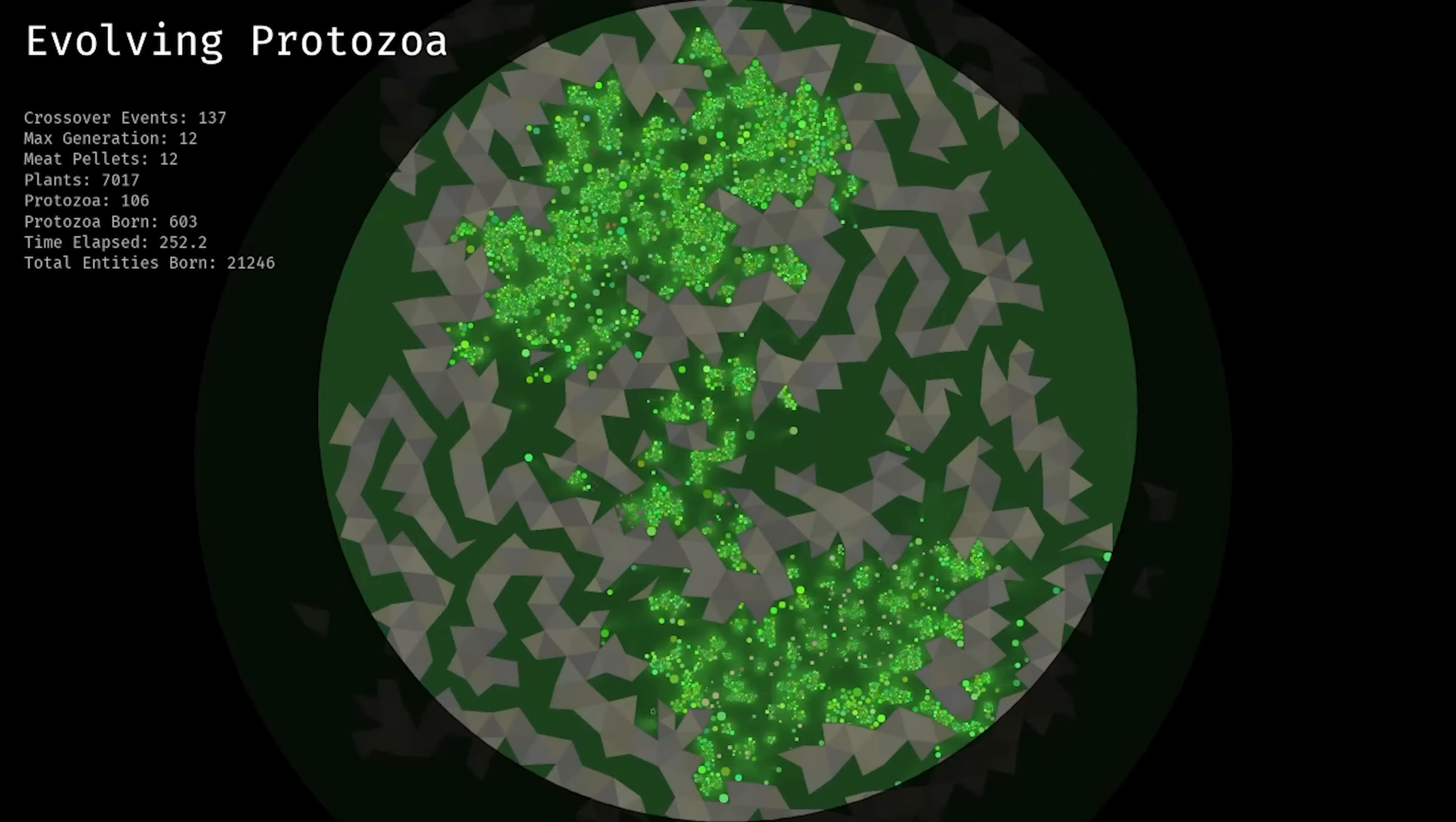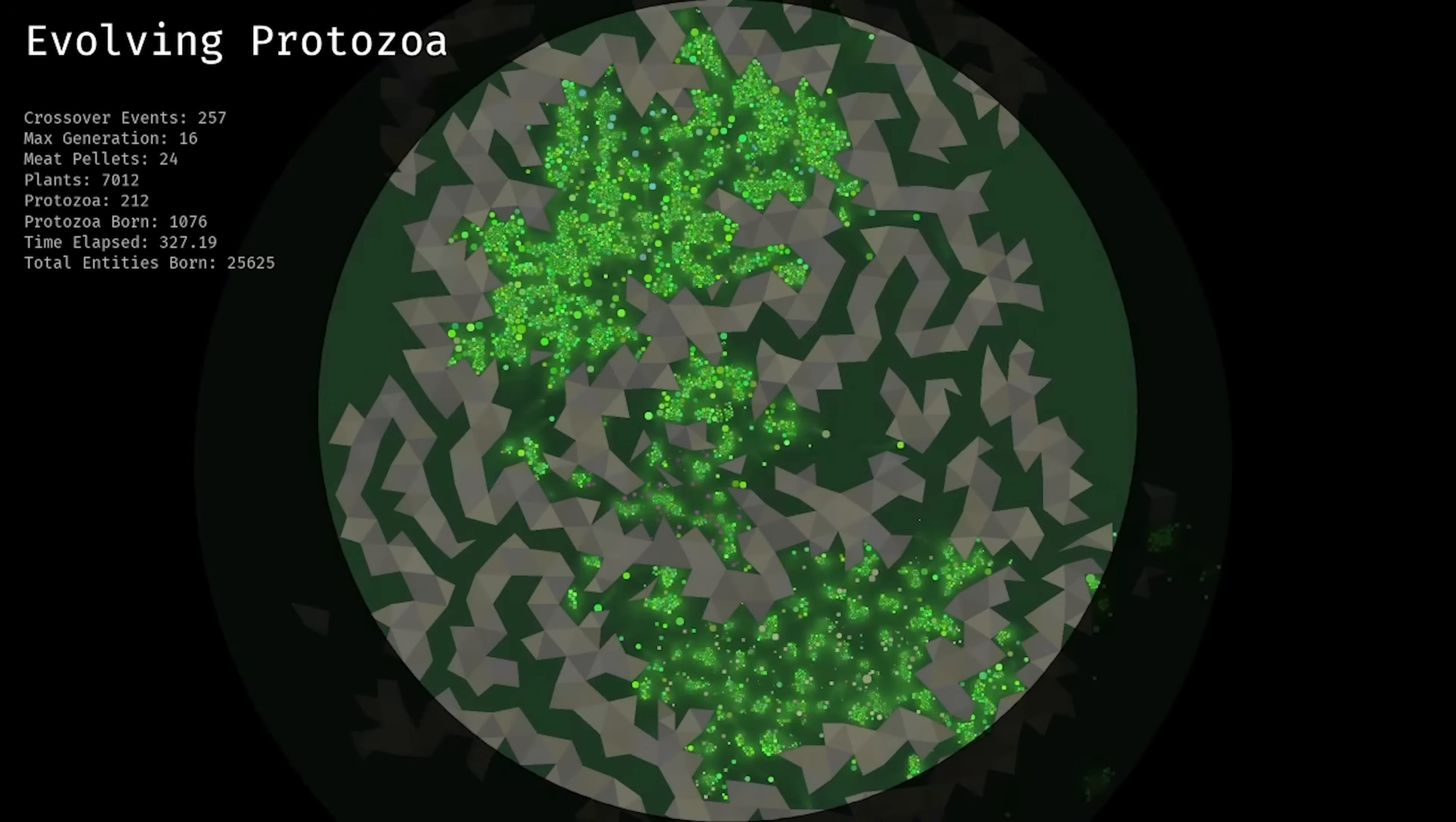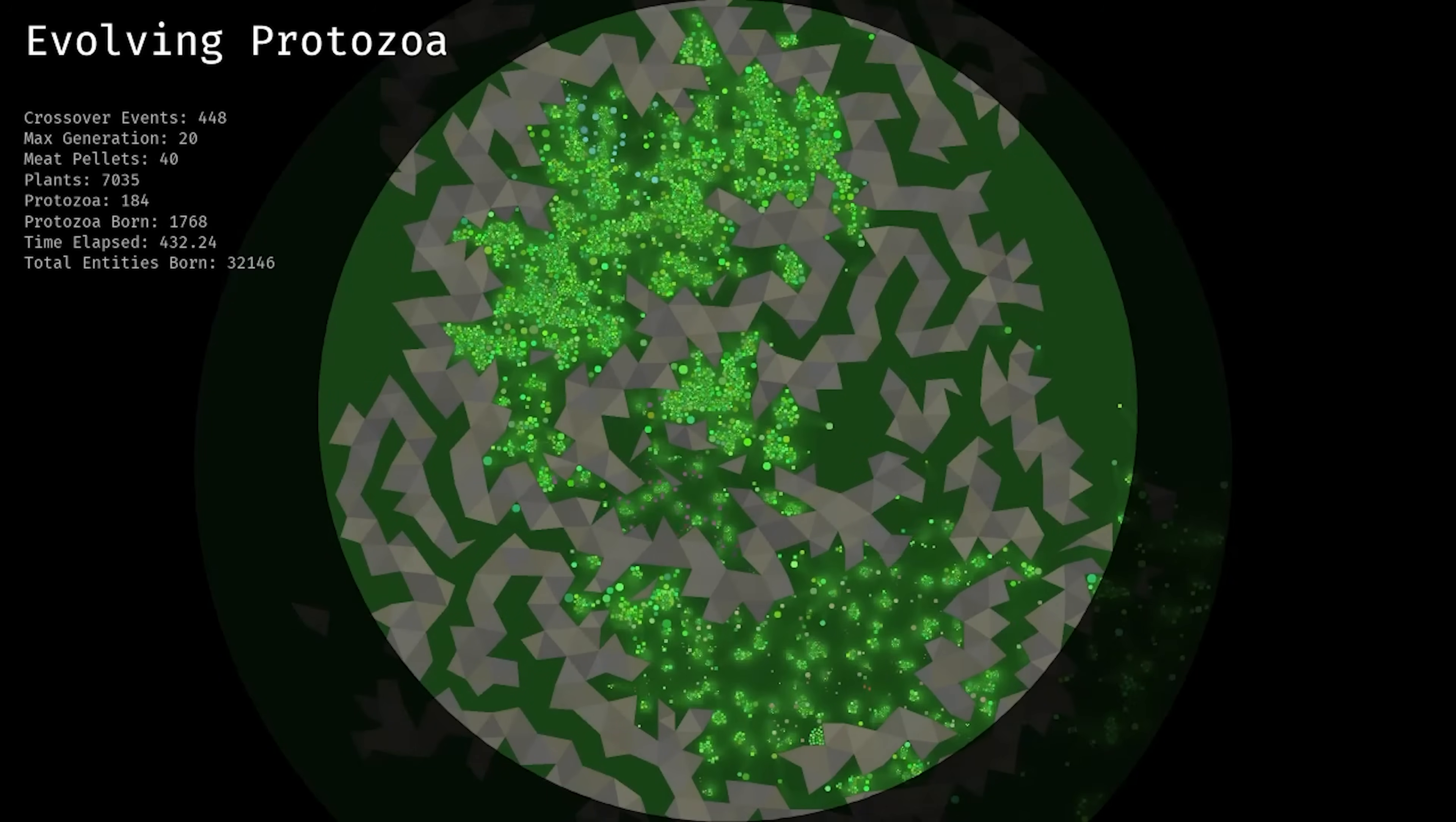As you can see, plant cells tend to clump together as they exert an attractive force on one another when they're close by. This keeps the plants from spreading out too thinly across the environment, as well as providing more concentrated resource sites for protozoa to compete over.